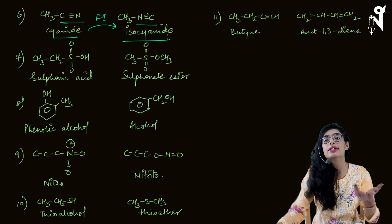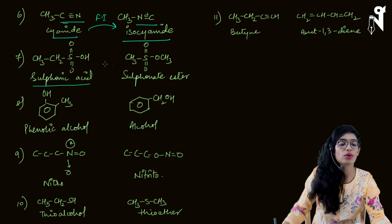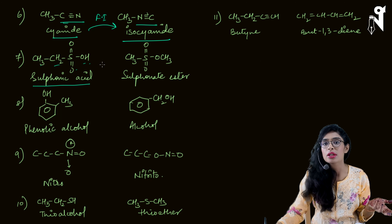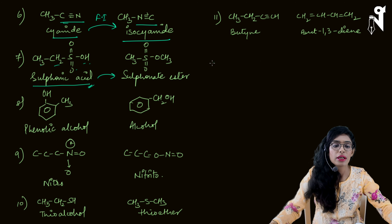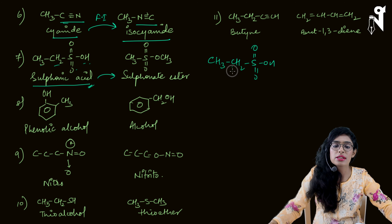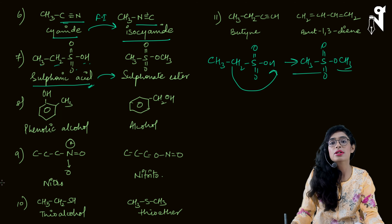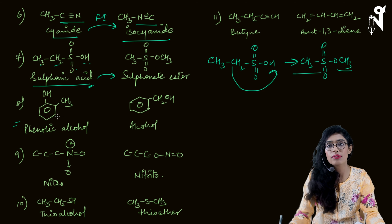Cyanide has its functional isomer as isocyanide. CH3CN can be rearranged to CH3NC — this is one example of a functional isomer. Any compound with cyanide can have its functional isomer as isocyanide. Similarly, sulfonic acid (CH3CH2SO3H) can be rearranged to a sulfonate ester — any acid can be converted to an ester as a functional isomer. So CH3CH2S(=O)(=O)OH rearranges to CH3S(=O)(=O)OCH3, becoming a sulfonic ester.